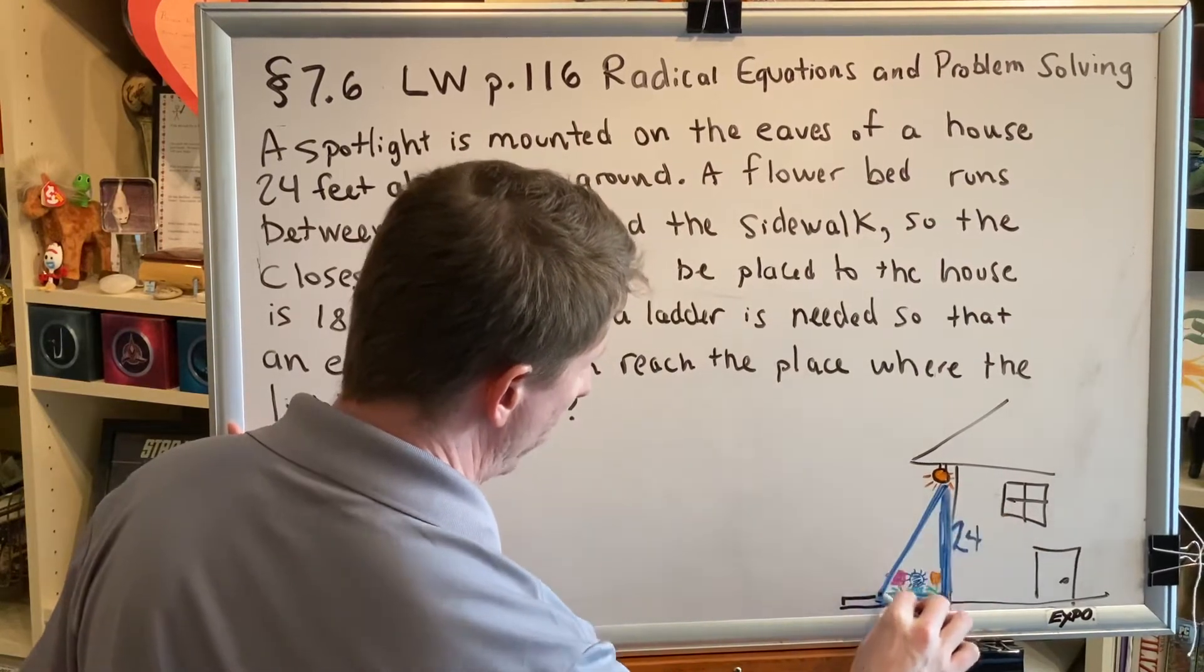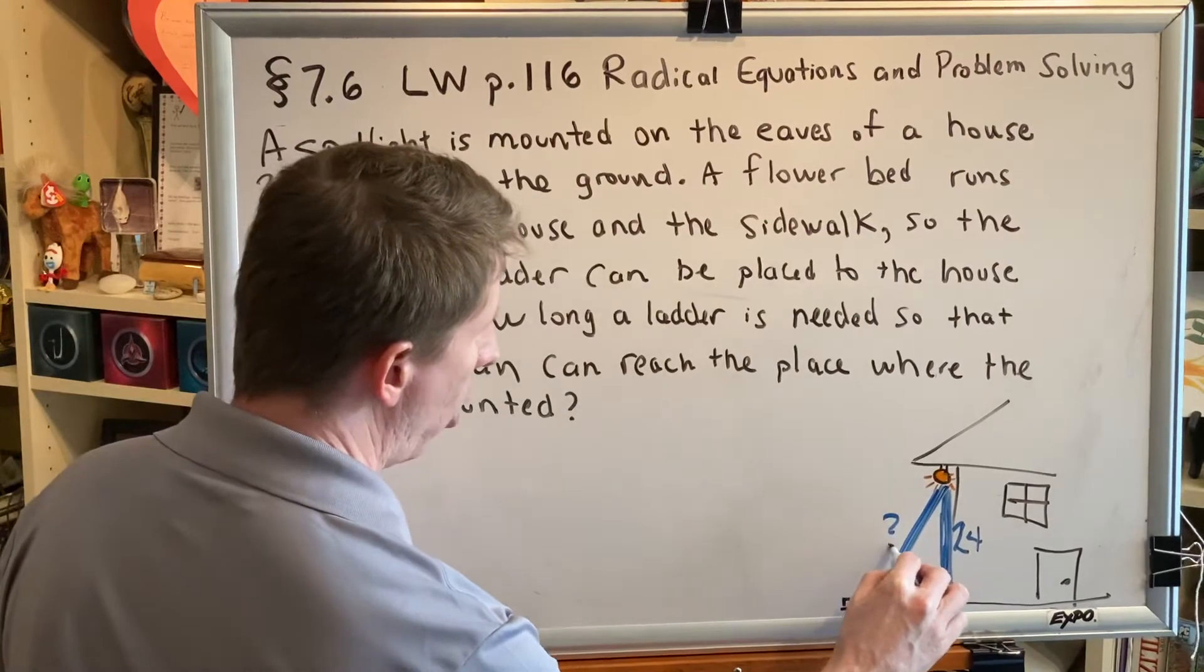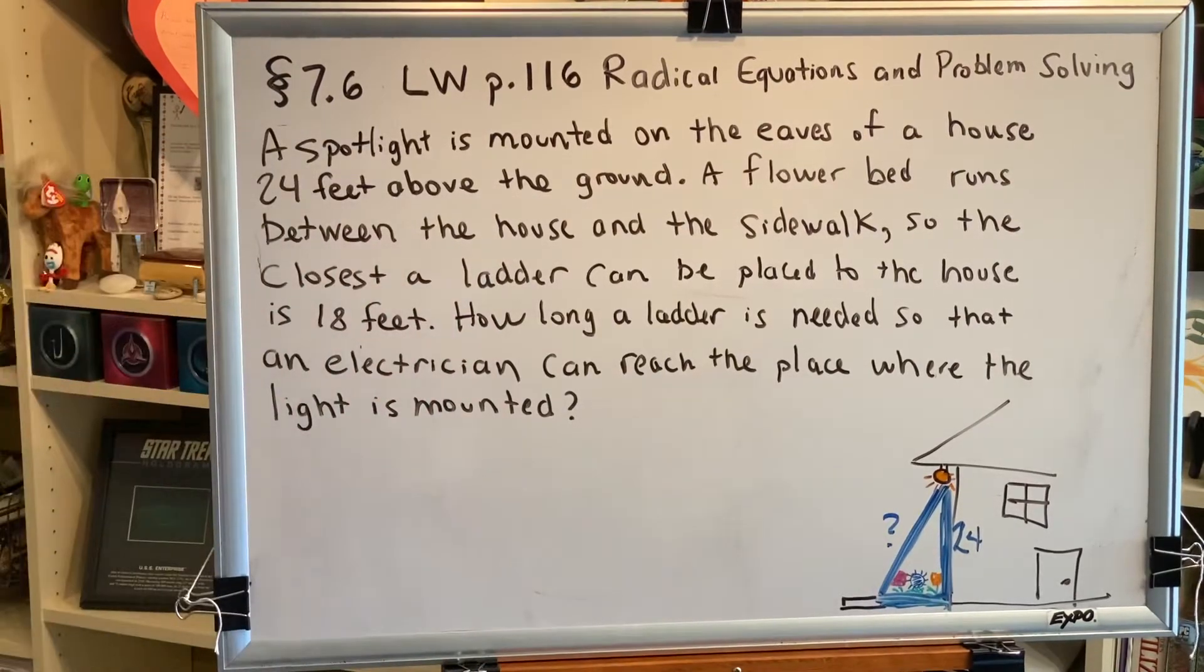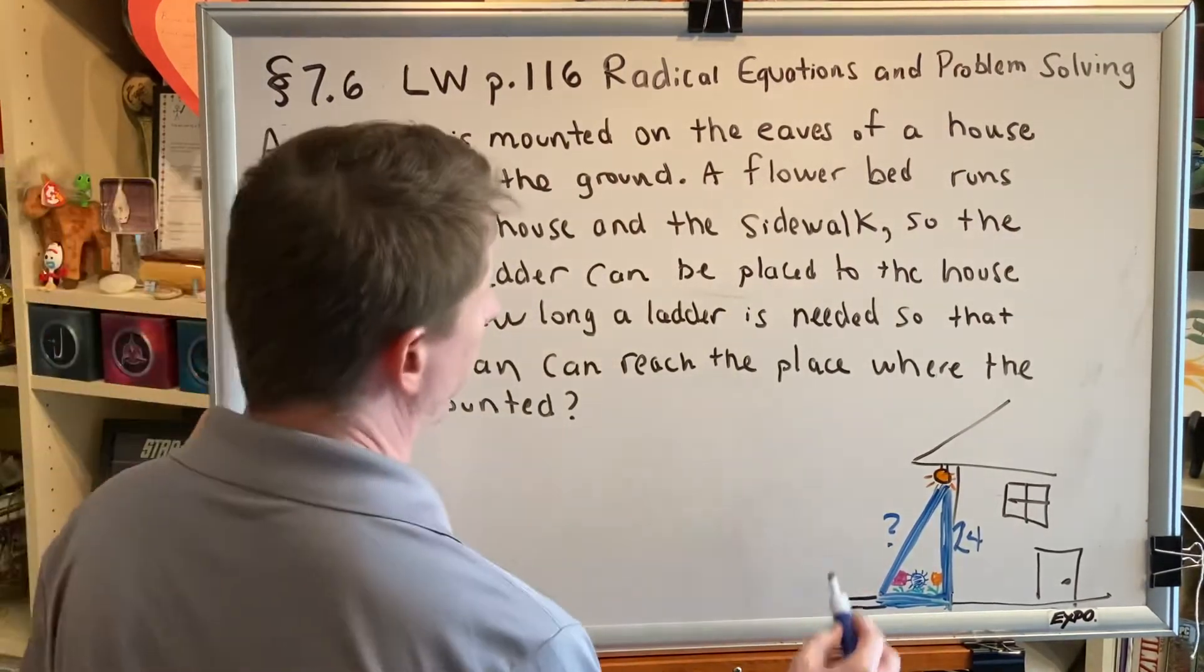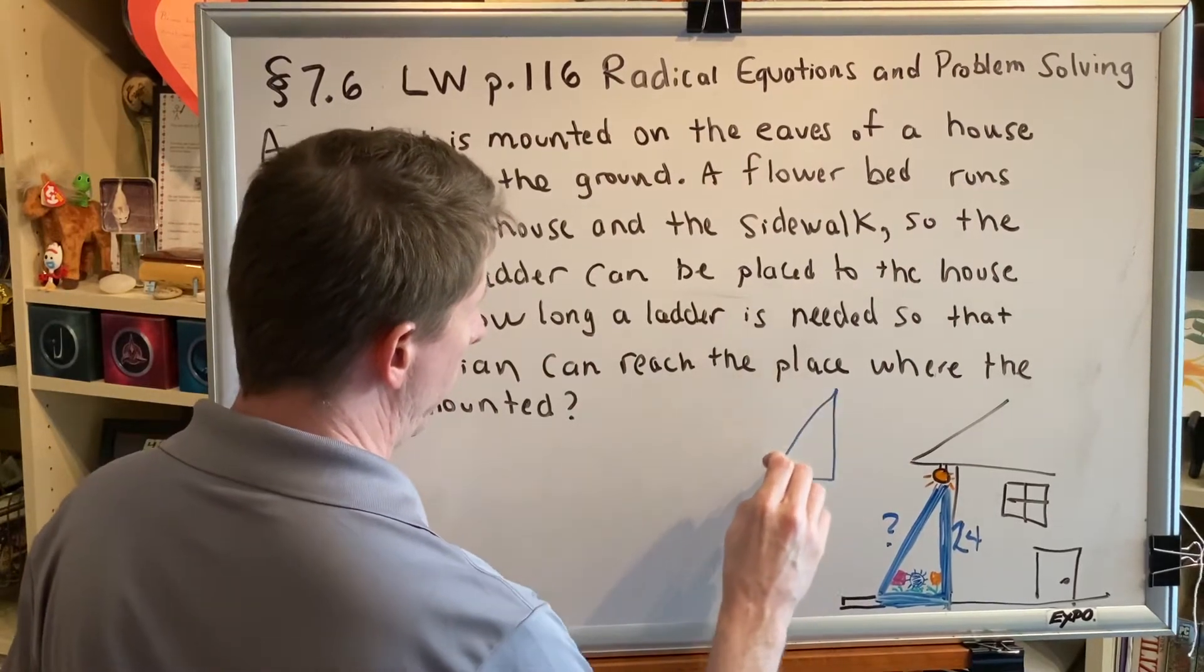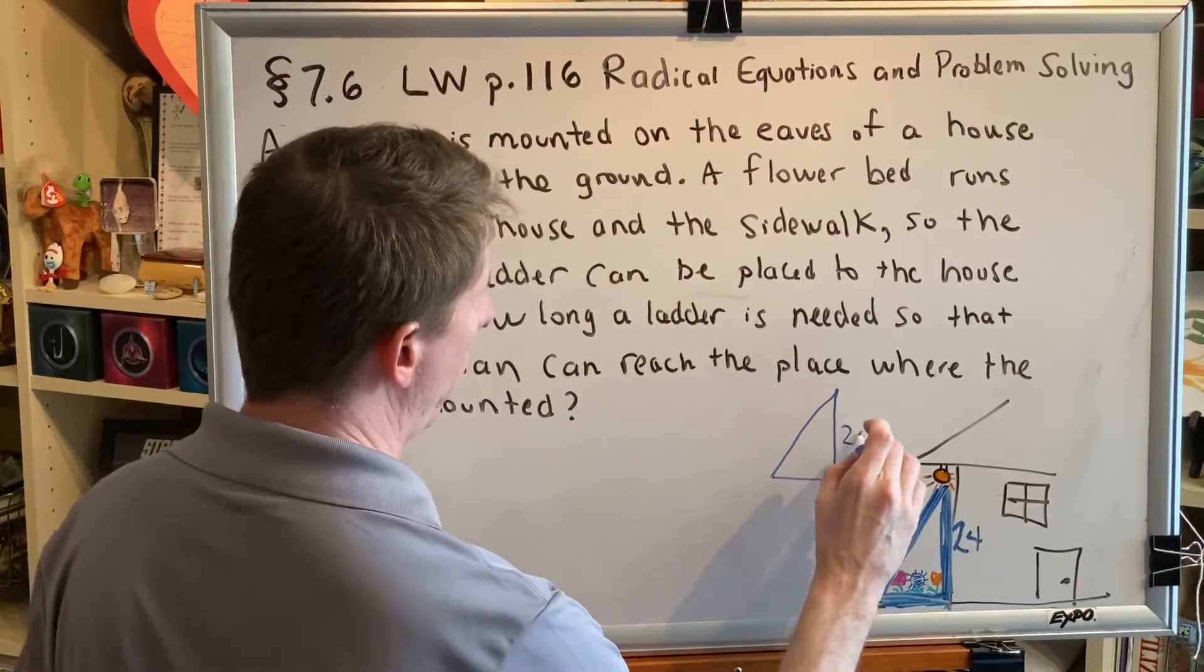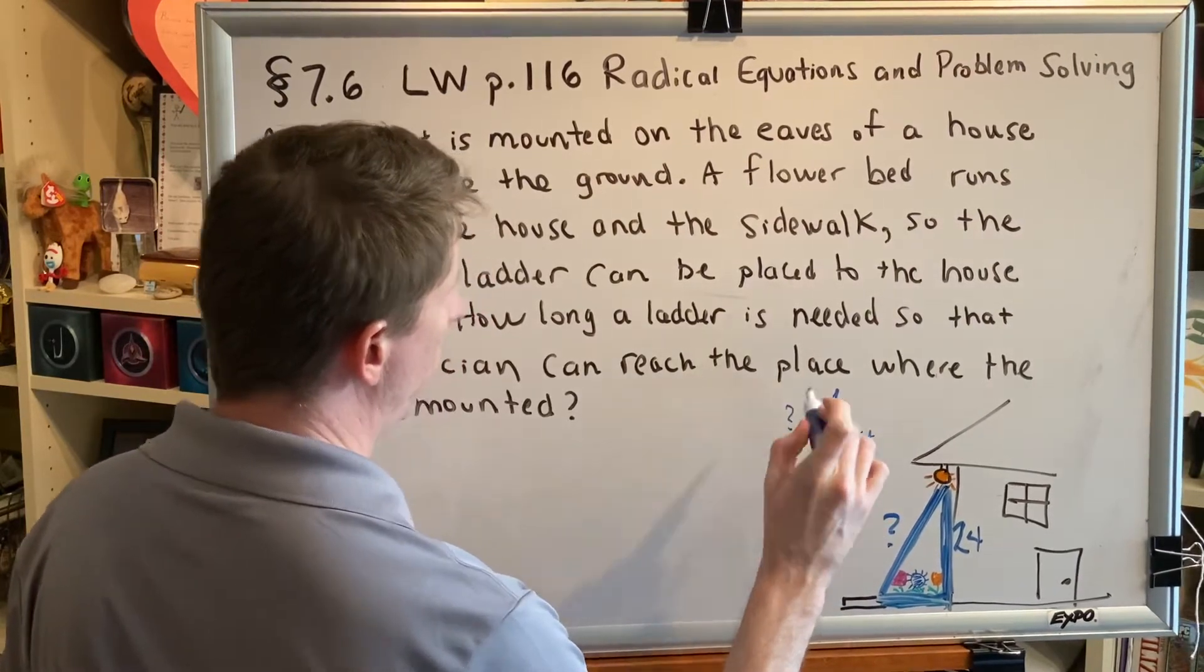The ladder is going to be placed right here, and the question is how long a ladder is needed so that an electrician can reach the light. Let's isolate the triangle part of this particular diagram. So here's what we see: there's a 24 here, there's an 18 here, and this is an unknown length to us.